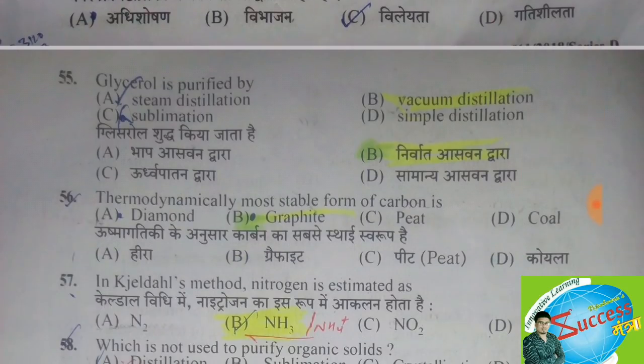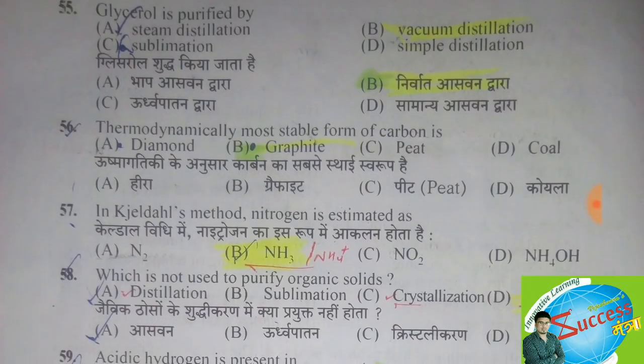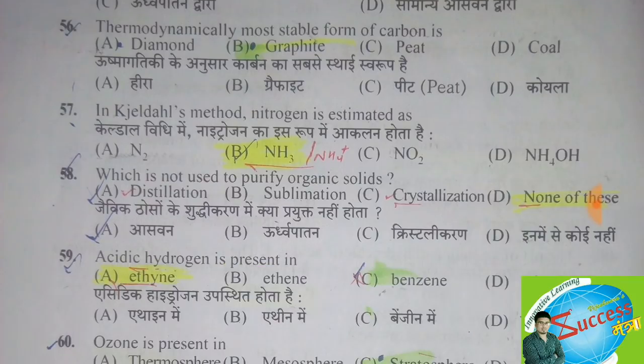Glycerol is purified by — the correct answer is option B, vacuum distillation. Thermodynamically the most stable form of carbon is option B, graphite. In Dumas' method, nitrogen is estimated as — the correct answer is option B, NH3 (ammonia) or ammonium ion NH4 positive.